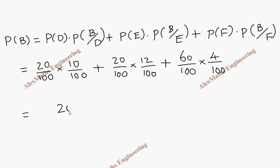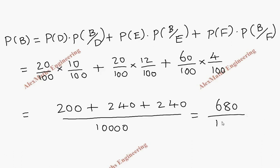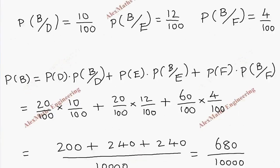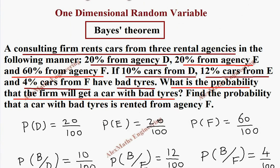Now totally this is 200 plus 240 plus 240 whole divided by 100 into 100, which is 10,000. Now in the numerator we get 680 divided by 10,000. And if you move four decimal places it is 0.068.